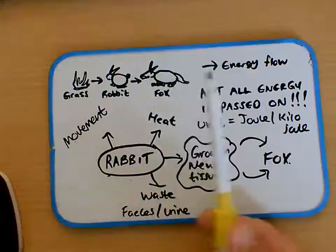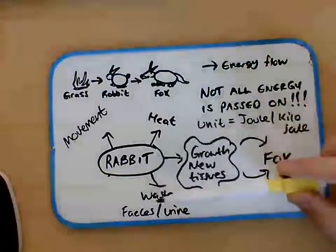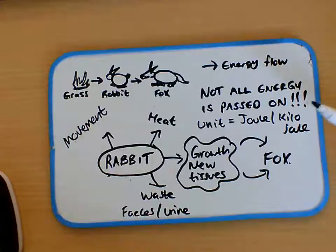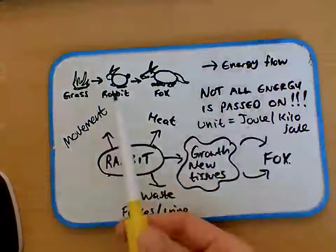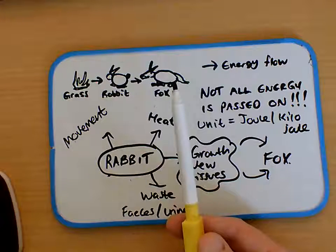Generally in a food chain, energy is flowing from left to right, from the plants to the animals. In a food web it's generally flowing from the plants to animals upwards. But the key thing is not all the energy is passed on. If the rabbit's got a thousand joules of energy, a thousand joules of energy is not going to be passed on to the fox when the fox eats it.